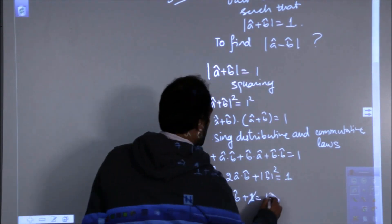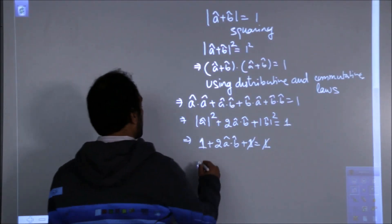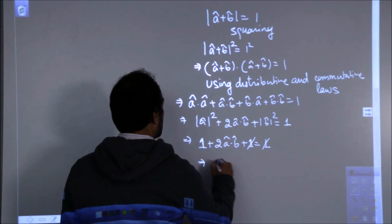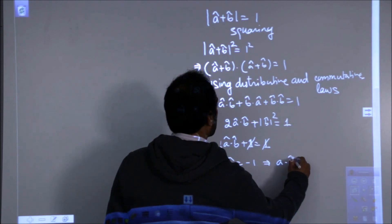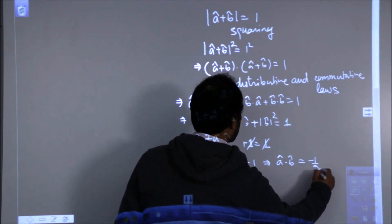Now, this is gone, so what is a dot b, twice of a dot b is minus 1 and hence a dot b is minus 1 by 2.